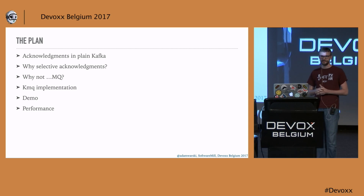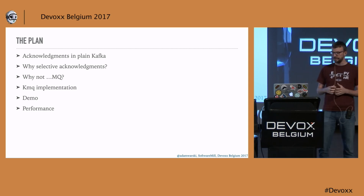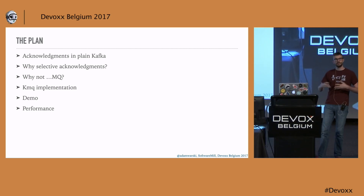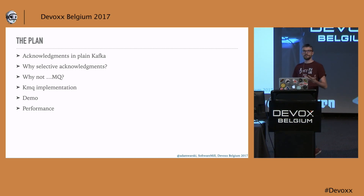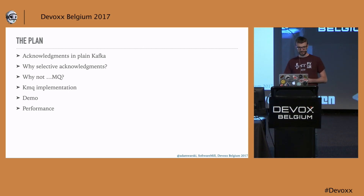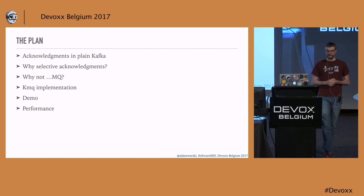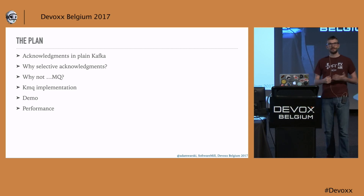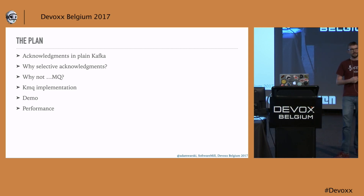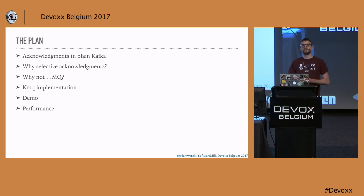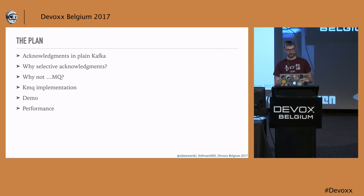The rough plan for the next 50 minutes or so: first we'll make an overview of how acknowledgements work in plain Kafka — what you get out of the box. Then we'll discuss why you would want a different model of acknowledgements, that is selective acknowledgements, and look at some alternatives. Kafka is certainly not alone here — there are other message implementations you might also want to use. Finally, we'll look at the implementation of a message queue on top of Kafka, which is called KMQ, and there will be a short demo.